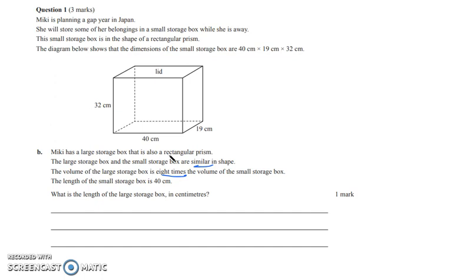So with this question the first thing we need to do is work out the volume of the small storage box. So the volume of the small is equal to length times width times height. So we can find that this volume here will be 32 by 40 by 19, which gives us 24,320 centimeters cubed.